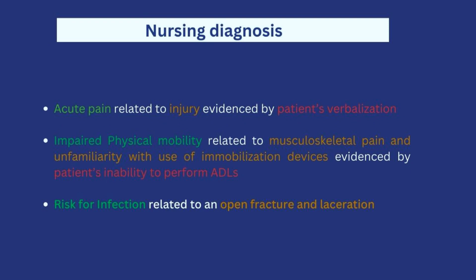First, we have acute pain related to injury, evidenced by patient's verbalization — the patient reported pain rated 8 out of 10. Second, we have impaired physical mobility related to musculoskeletal pain and unfamiliarity with the use of immobilization devices, evidenced by patient's inability to perform ADLs. Since Mrs. Nwako has never had a fracture before, immobilization devices such as crutches or wheelchairs will be unfamiliar to her, potentially impairing her ability to use them.